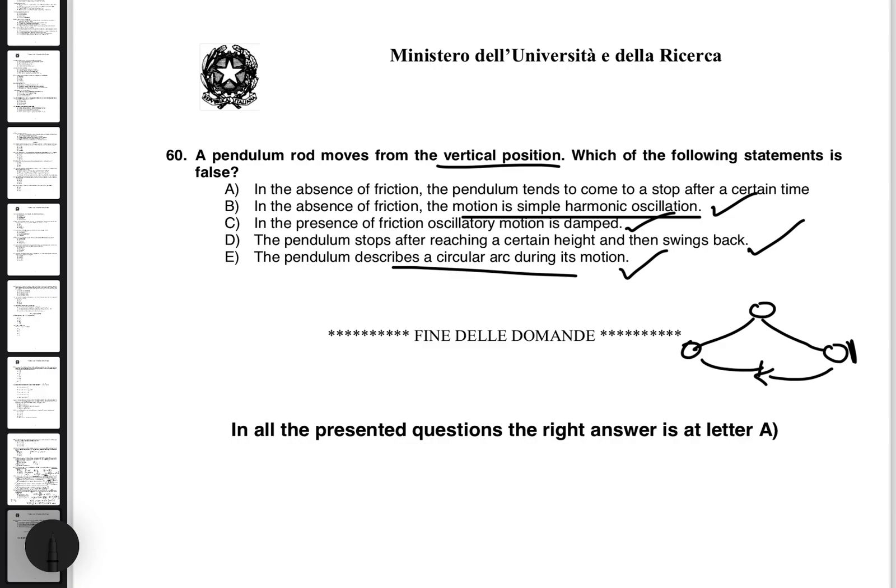So the pendulum describes a circular arc, that is obviously true. Let's take a look at A now. It says in the absence of friction, the pendulum tends to come to a stop. If there is no friction, this pendulum will go on doing its thing forever. So obviously, the correct answer is A, which happens to be false. So it's actually the correct answer, but the answer itself is false.